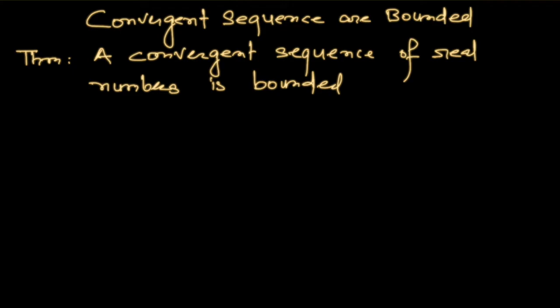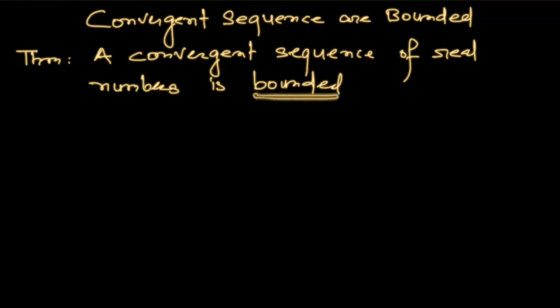Now we'll see a theorem which says that a convergent sequence of real numbers is bounded. So if you have a convergent sequence, we are sure that it will be bounded. Why should this happen? Suppose you have a convergent sequence.